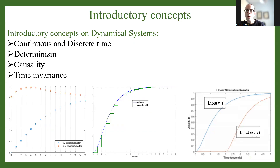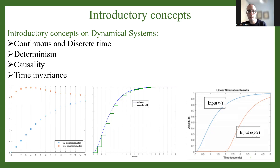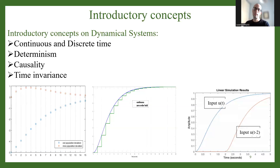For introductory concepts, we should start with introducing and explaining continuous and discrete time to students. The concept of determinism — being able to reproduce a system again and again in case it's deterministic, in contrast to being stochastic. The concept of causality, where the present depends on the past. And also the fundamental concept of time invariance.